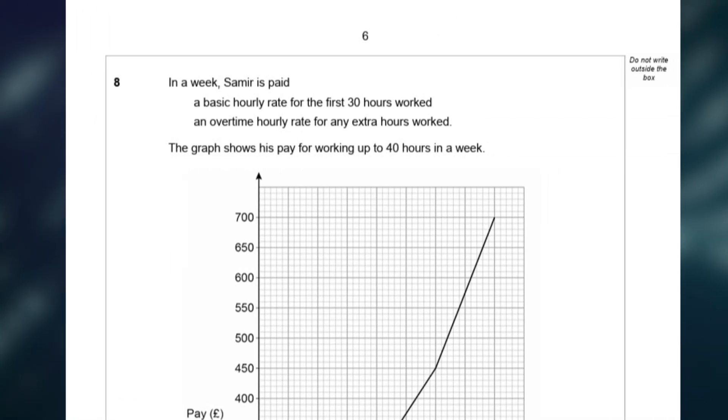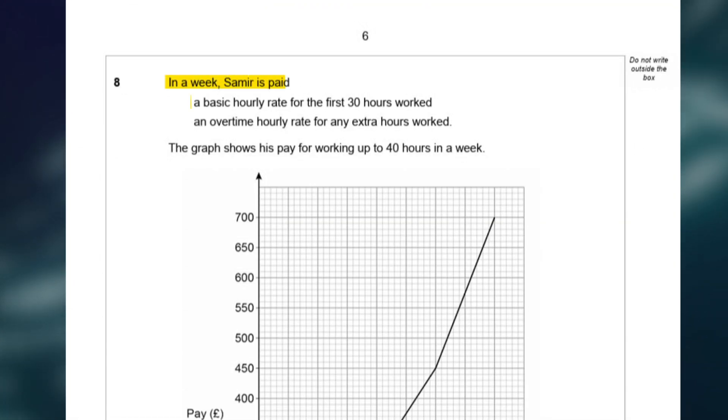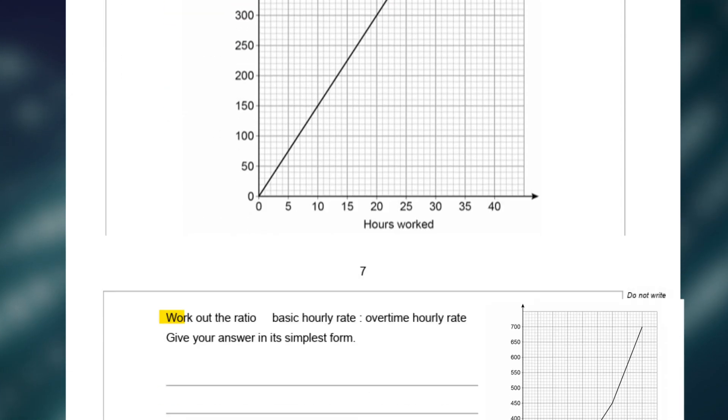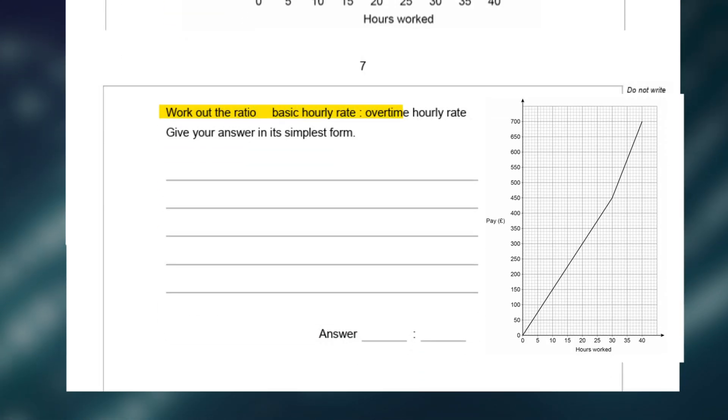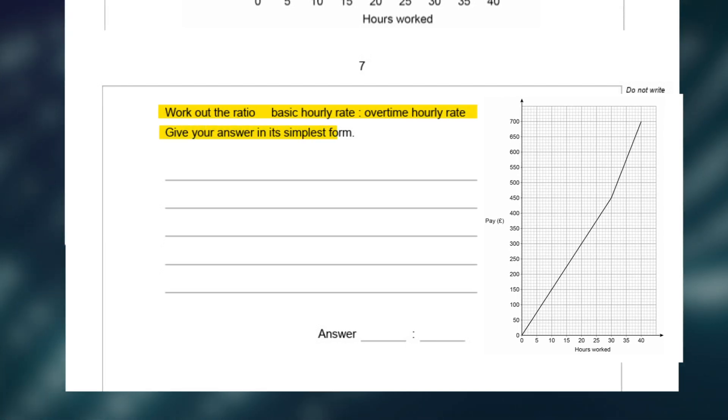The next question is question 8, and the examiner's report states that just over half of the students completed this question correctly. It reads, in a week, Samir is paid a basic hourly rate for the first 30 hours worked, and an overtime hourly rate for any extra hours worked. The graph shows his pay for working up to 40 hours in a week. The question asks you to work out the ratio of the basic hourly rate to the overtime hourly rate, and give your answer in its simplest form.